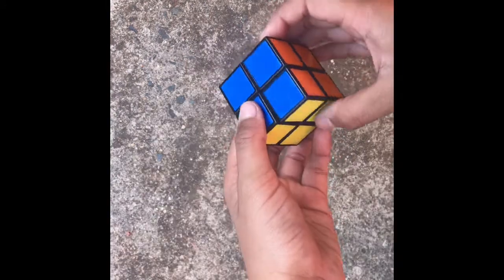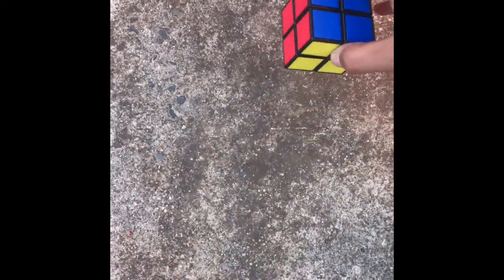Hey guys, it's JJ Cuber, and today I'm going to be comparing Ortega, CLL, and EG. In case you didn't know, those are all names for methods on the 2x2. So I'm going to go through an overview of each one.